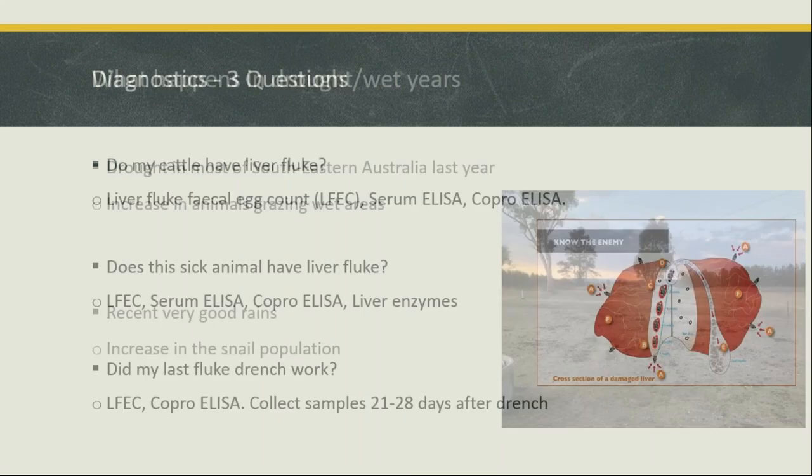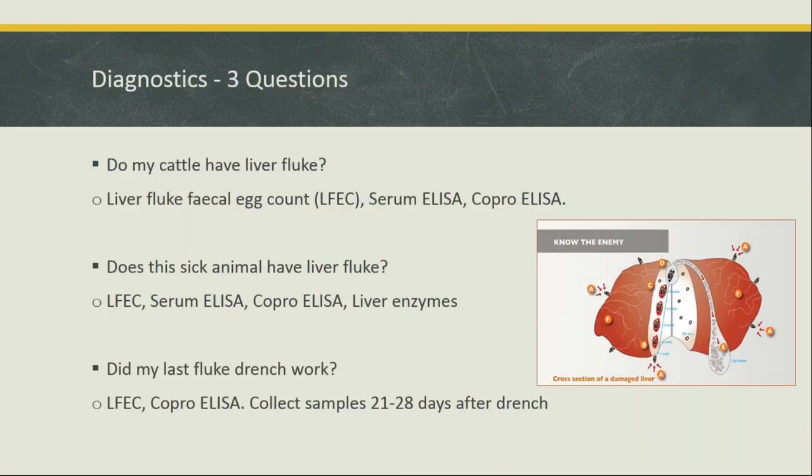Quite a few people say they don't have liver fluke, then all of a sudden get hit by it. But all the time, it can be just ticking along at very low levels and until stresses like a really dry year or really wet year occur, they don't raise their head too much.